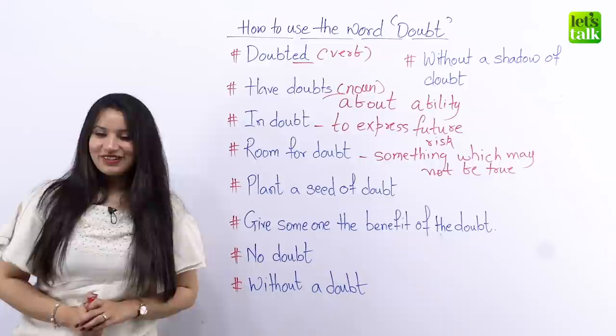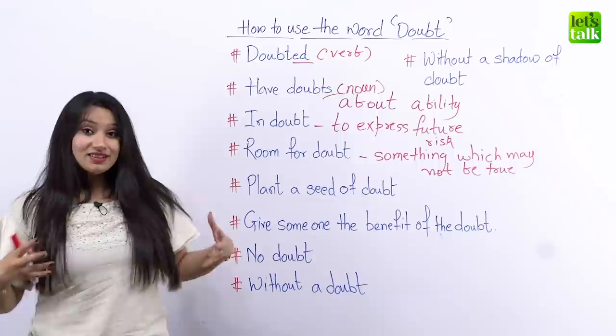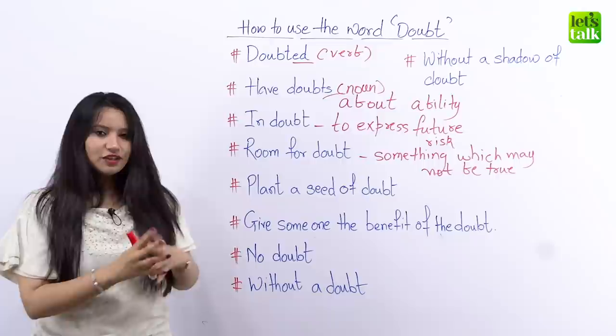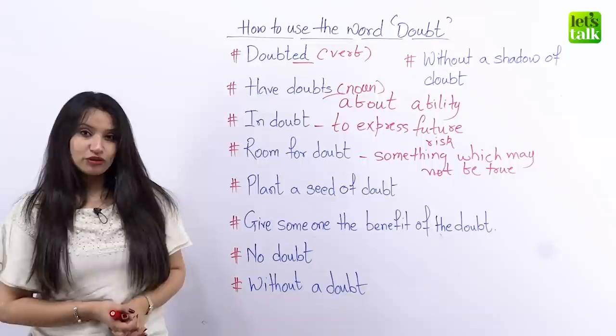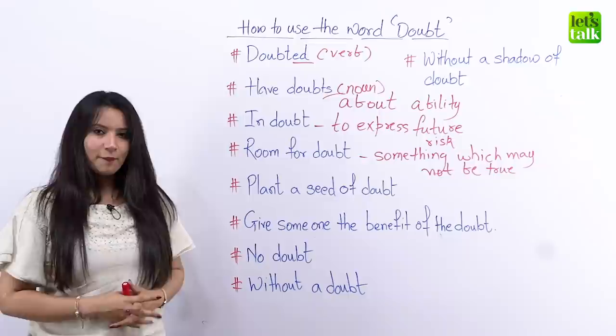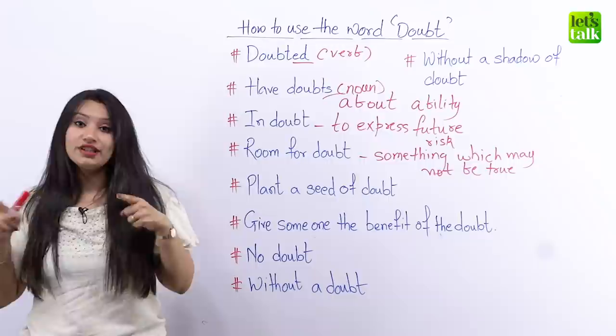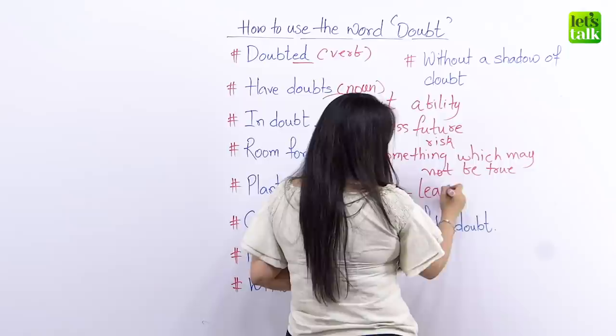Now let's look at the phrase 'plant a seed of doubt.' Sometimes there are situations which look perfectly fine, but then certain things cause you to doubt. You might think there's something fishy about the situation — that's when someone is planting a seed of doubt. For example, if you think someone appears to be honest but they keep getting calls from another person, that plants a seed of doubt — it leads you to doubt them. So 'plant a seed of doubt' means to lead someone to doubt you.